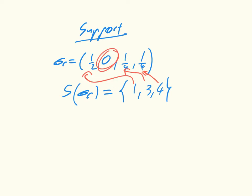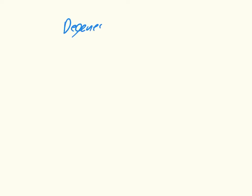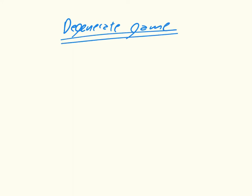Building on top of that, we have another definition: the definition of what is called a degenerate game. The main reason we need this definition is because we're mostly not going to consider degenerate games, so we need to know what they're called so we can not worry about them anymore. A degenerate game is simply any game where a mixed strategy of support size k — playing k pure strategies with some probabilities — has more than k pure best responses.